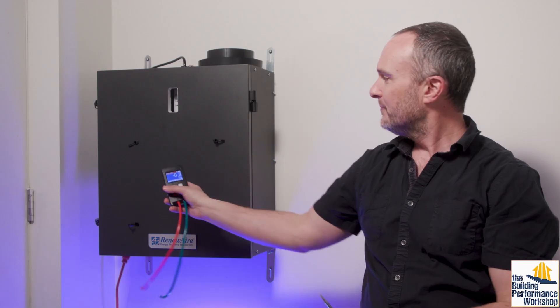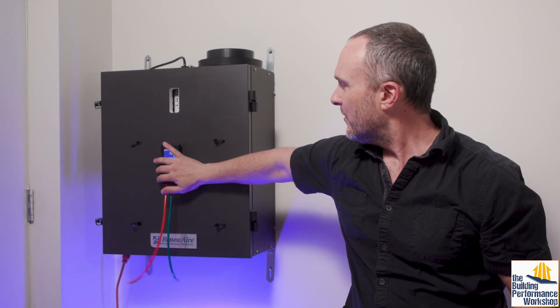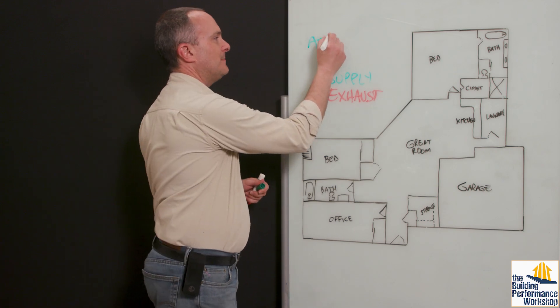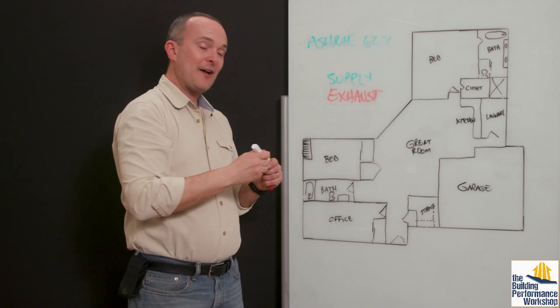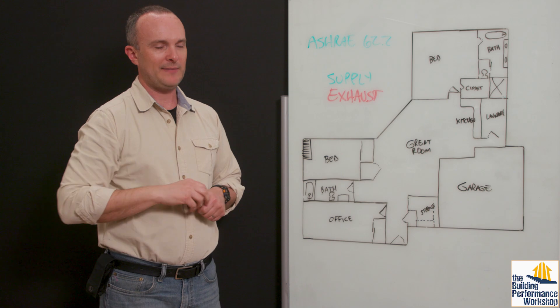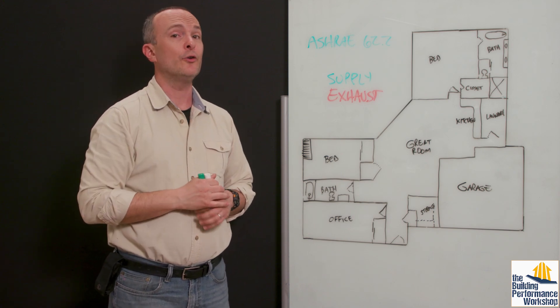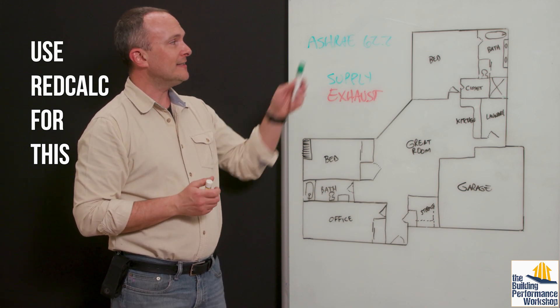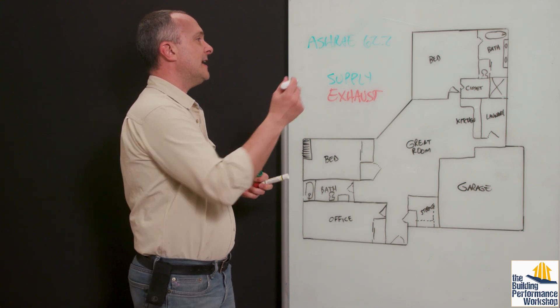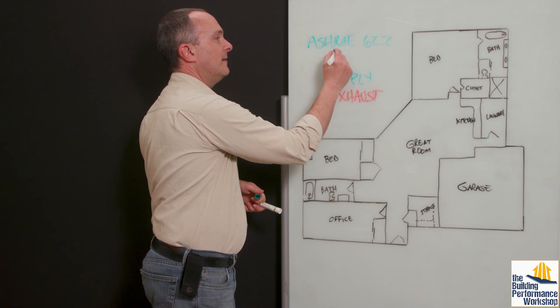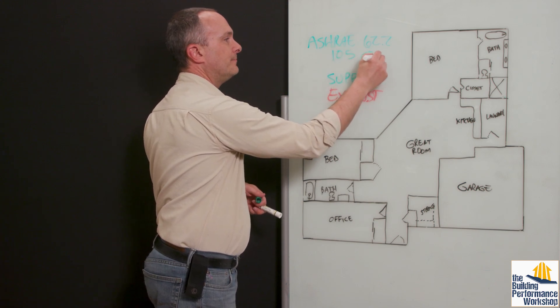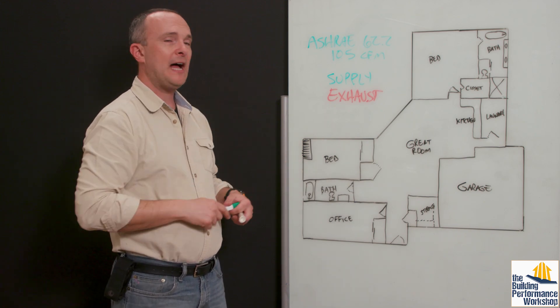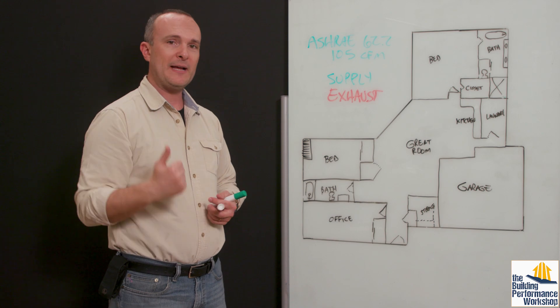And I've got a video on screen right now about how that commissioning process works. But what we want to do is use ASHRAE 62.2. And I have a video that I'm linking on screen now about how to calculate it. It's not very pretty. It's complicated. But there is a calculator online called Red Calc that I use all the time to get this information. That'll tell you a number. Let's just say, for the sake of argument, that it's 105 CFM.